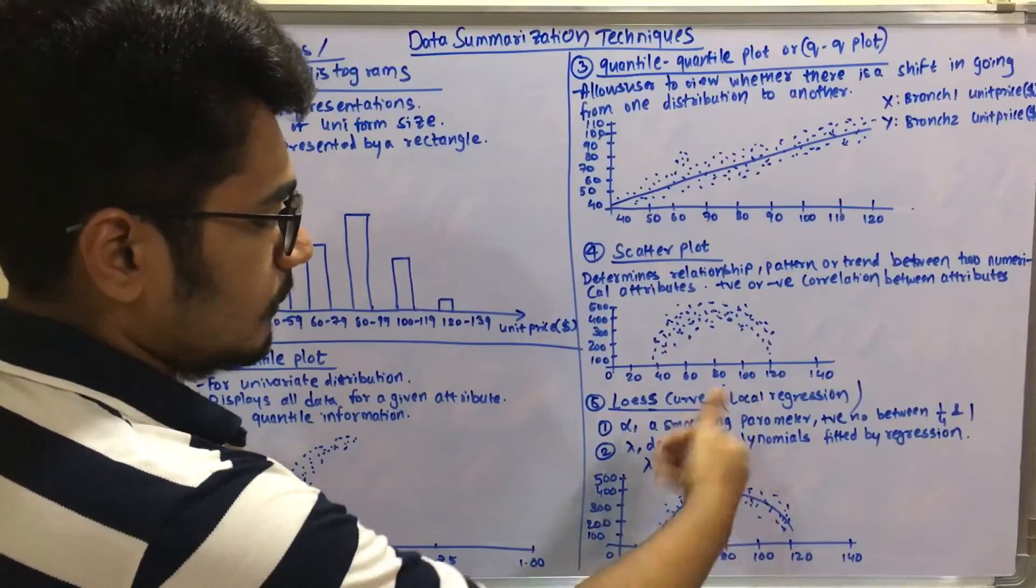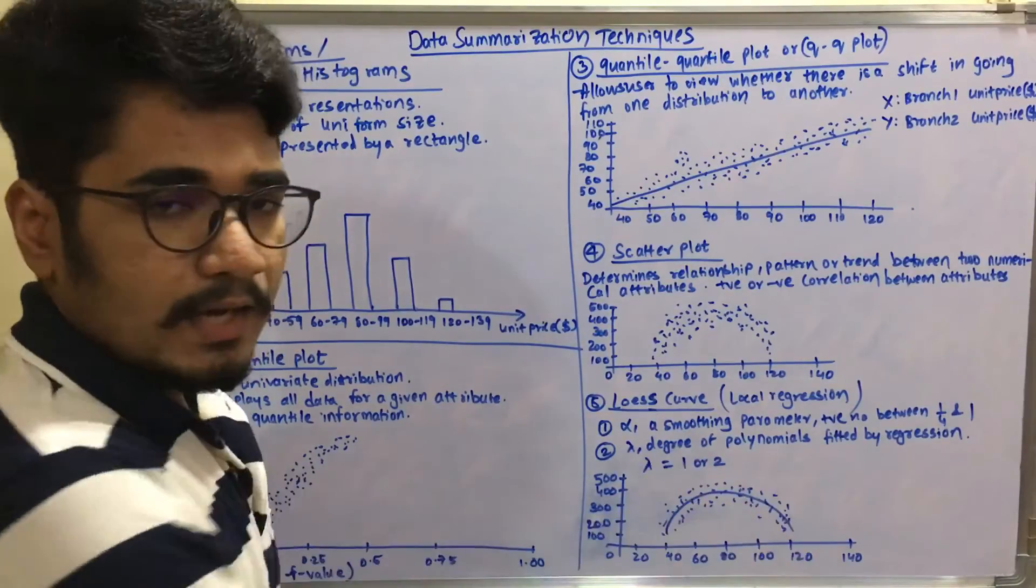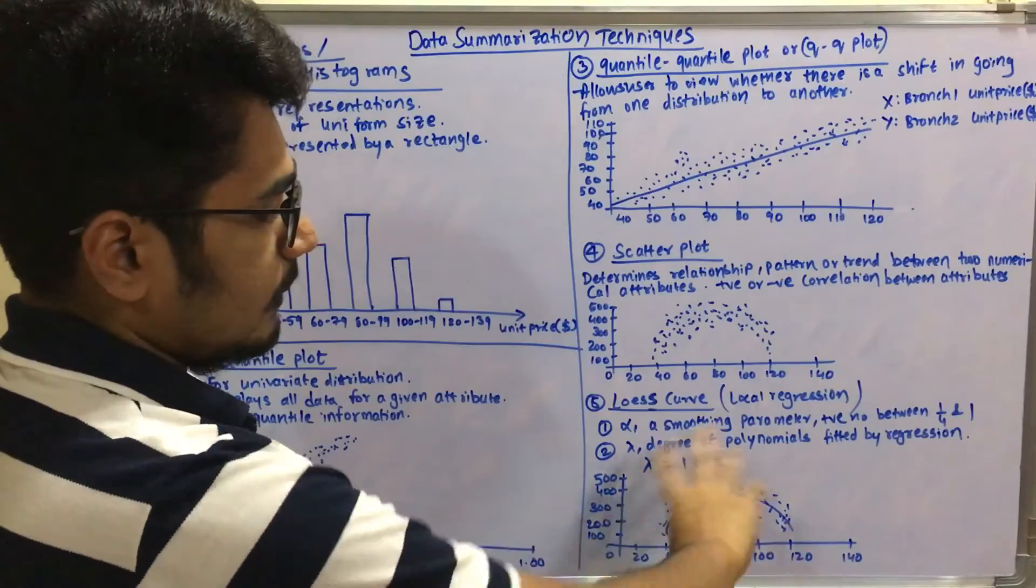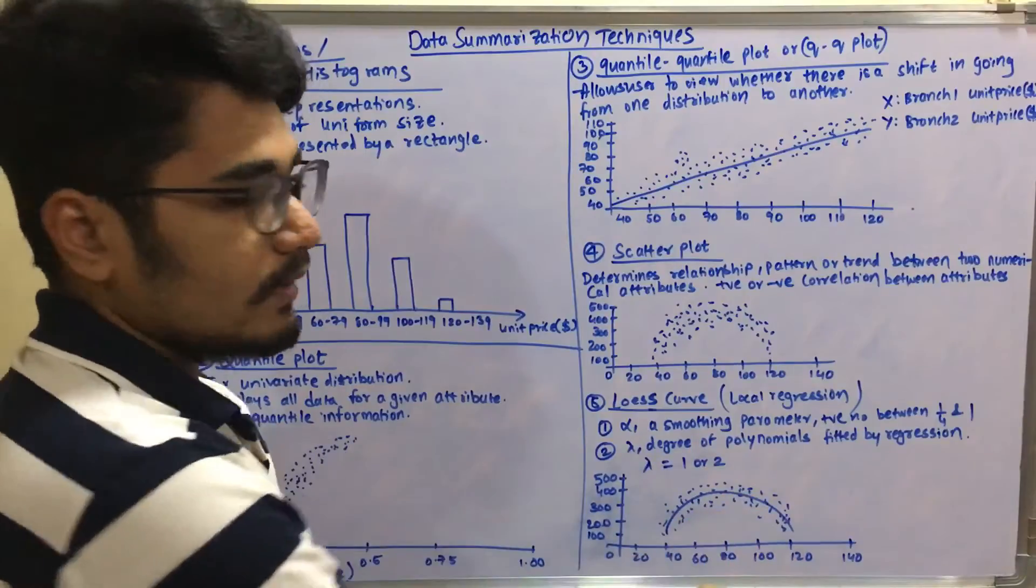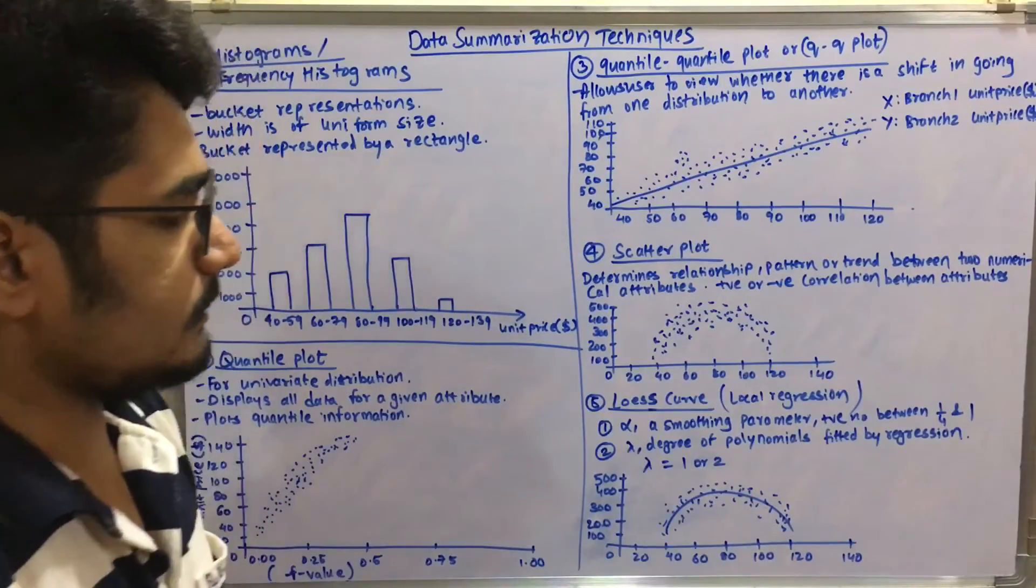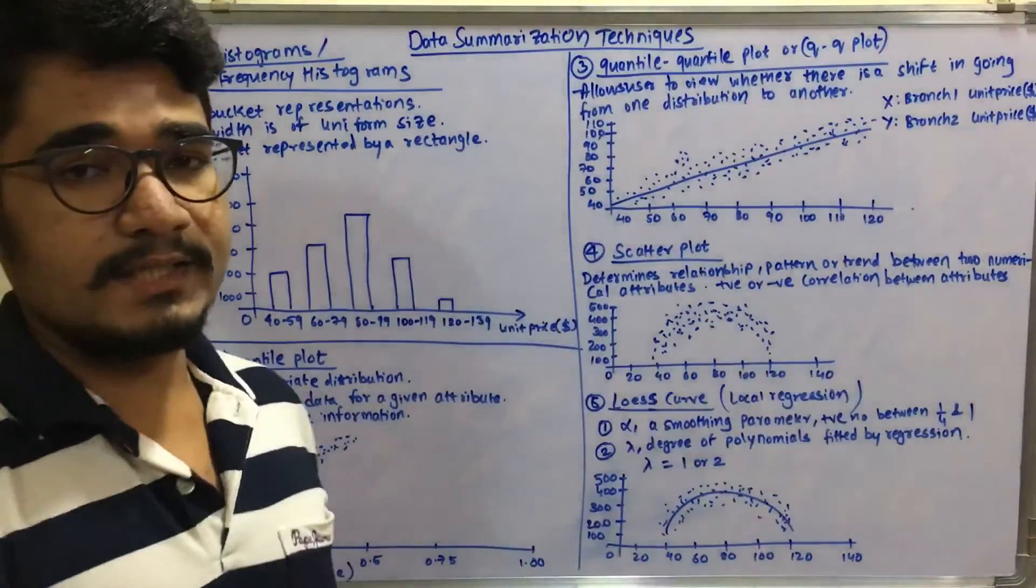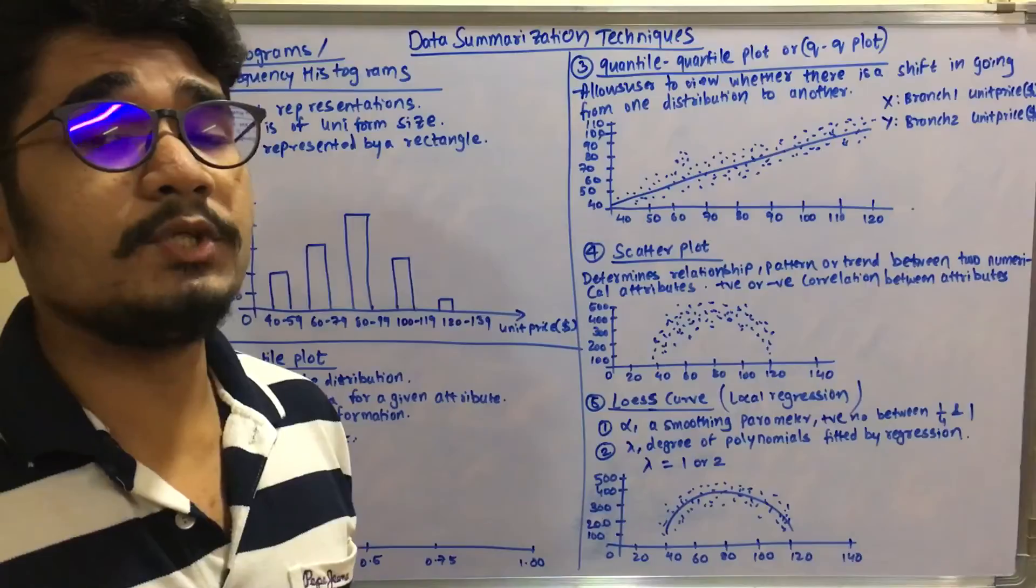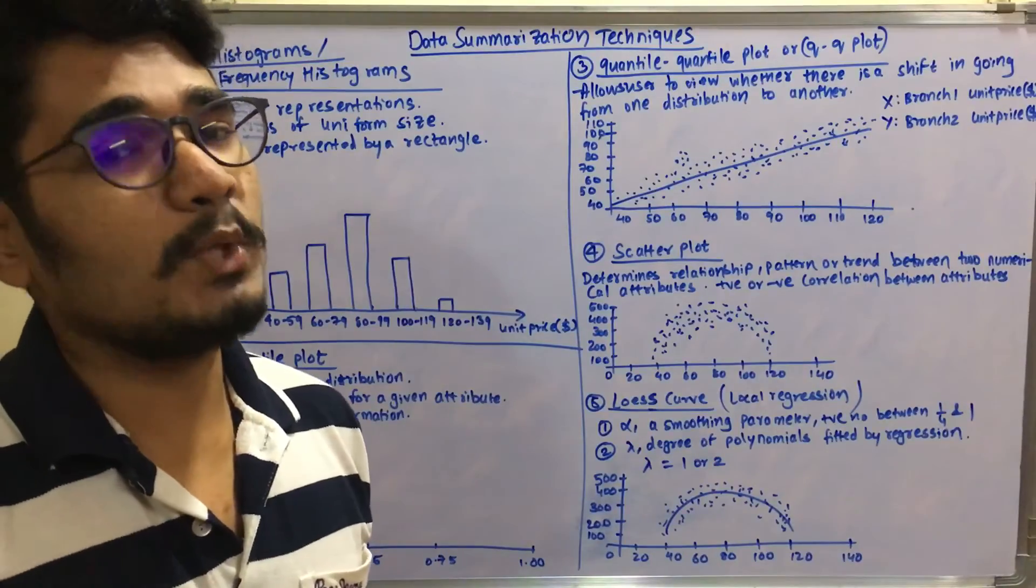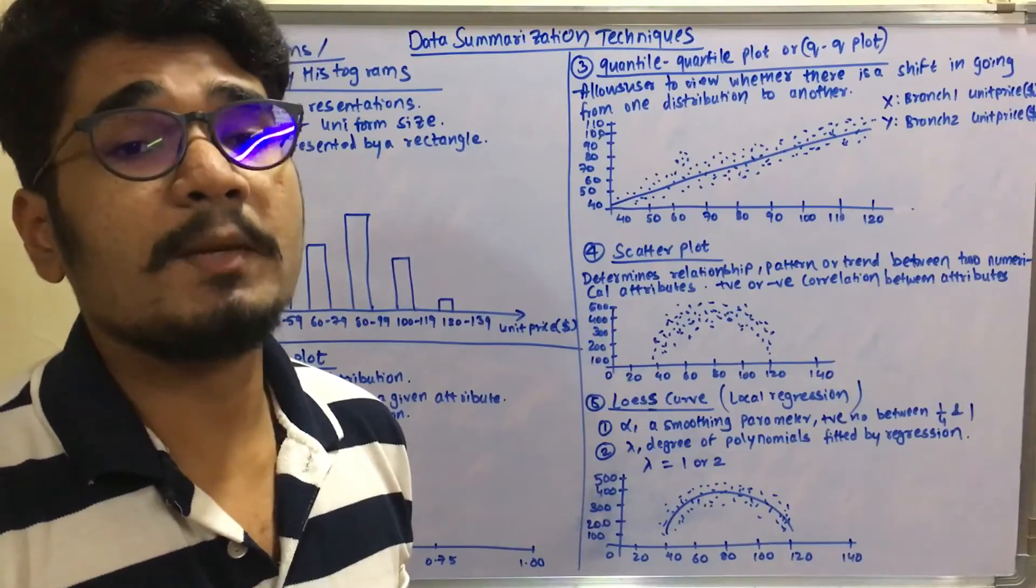So you have this loess curve that is represented in this manner. A kind of arc is drawn and some data points are scattered there. It's like a scatter plot basically, then you have a curve that is a line in this. So that's all about the data summarization techniques in data mining. Hope you guys enjoyed this video. If you found you got educated by watching this video, please do like, share, comment and most importantly don't forget to subscribe to my channel. Thank you very much for watching this video.